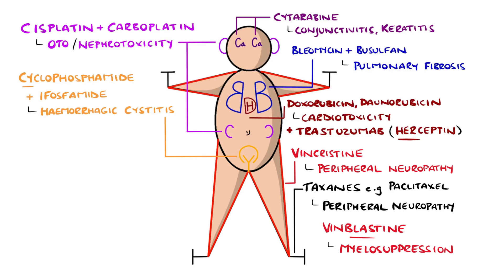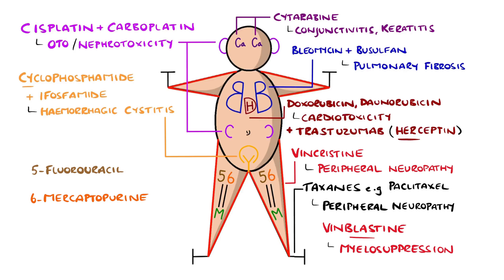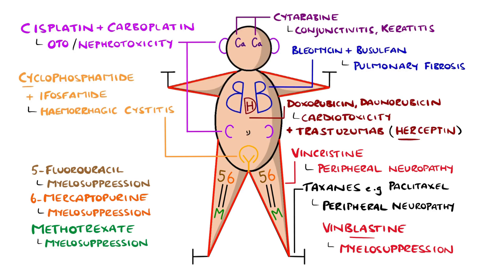If we draw 5 and 6 at the thigh, and an M at the knee, it roughly resembles bone, to help remind you of bone marrow, and that 5-fluorouracil and 6-mercaptopurine as well as methotrexate can all cause myelosuppression.